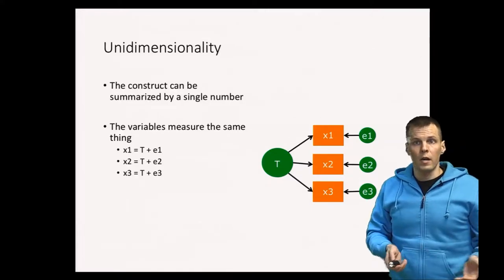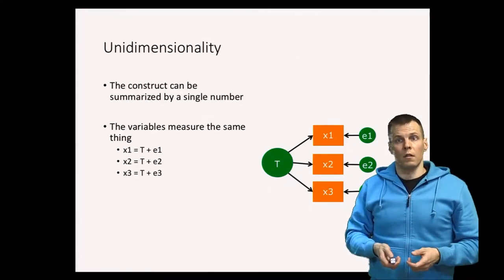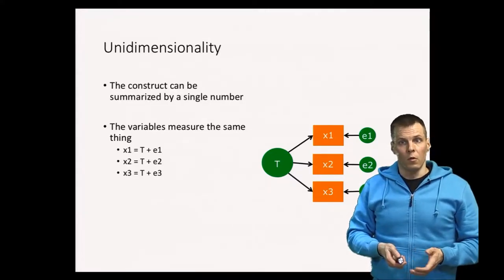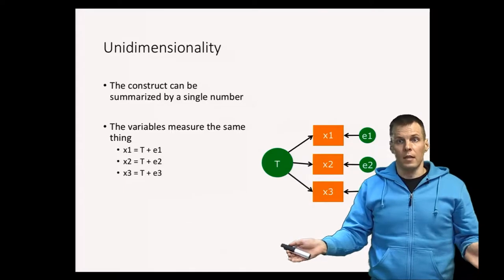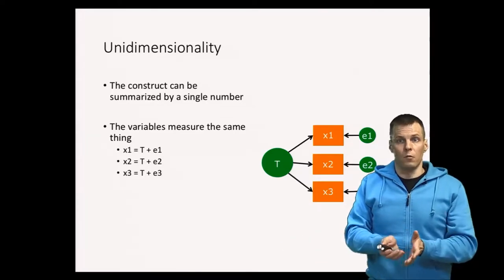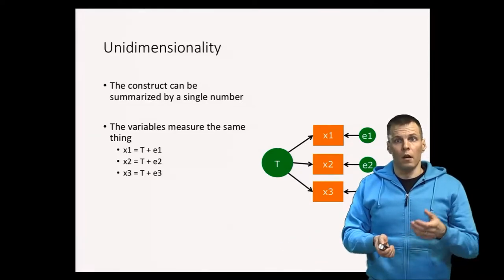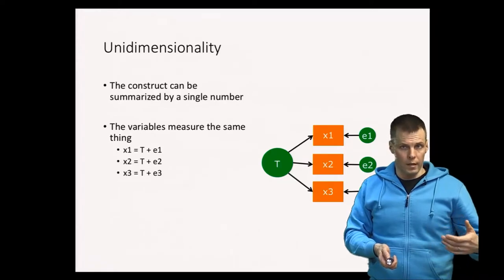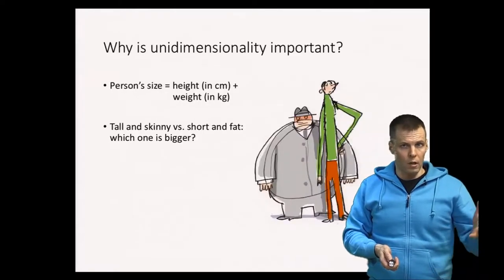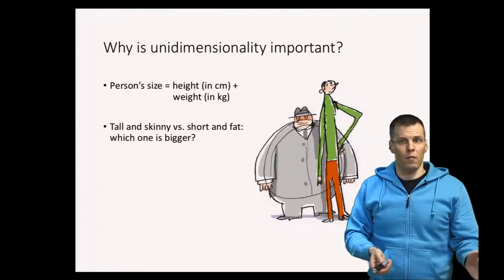So why is unidimensionality important? Why can't you just summarize these things into a single score? The reason can be understood with an example.